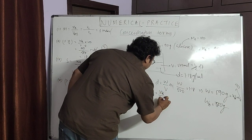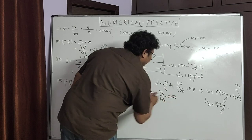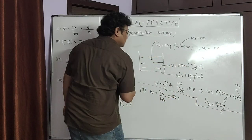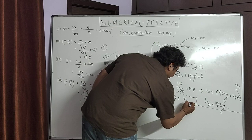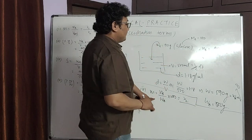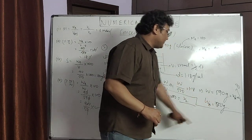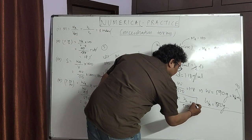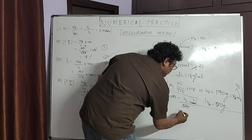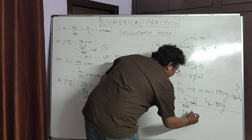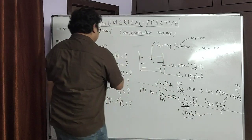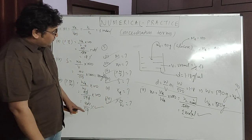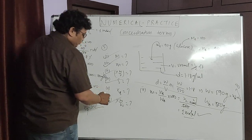For molality: moles of solute per kg of solvent. Moles of solute = 0.5, mass of solvent = 500 grams = 0.5 kg. So molality = 0.5/0.5 = 1 molal. Molality is also done.